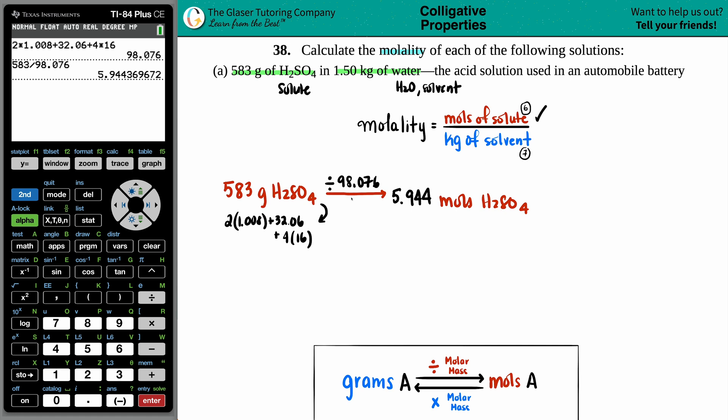Okay, moles is checked. Now, kilograms of the solvent. That means that, oh well, they already gave me kilograms. 1.50 kilograms of the water. We have that. That was fun.